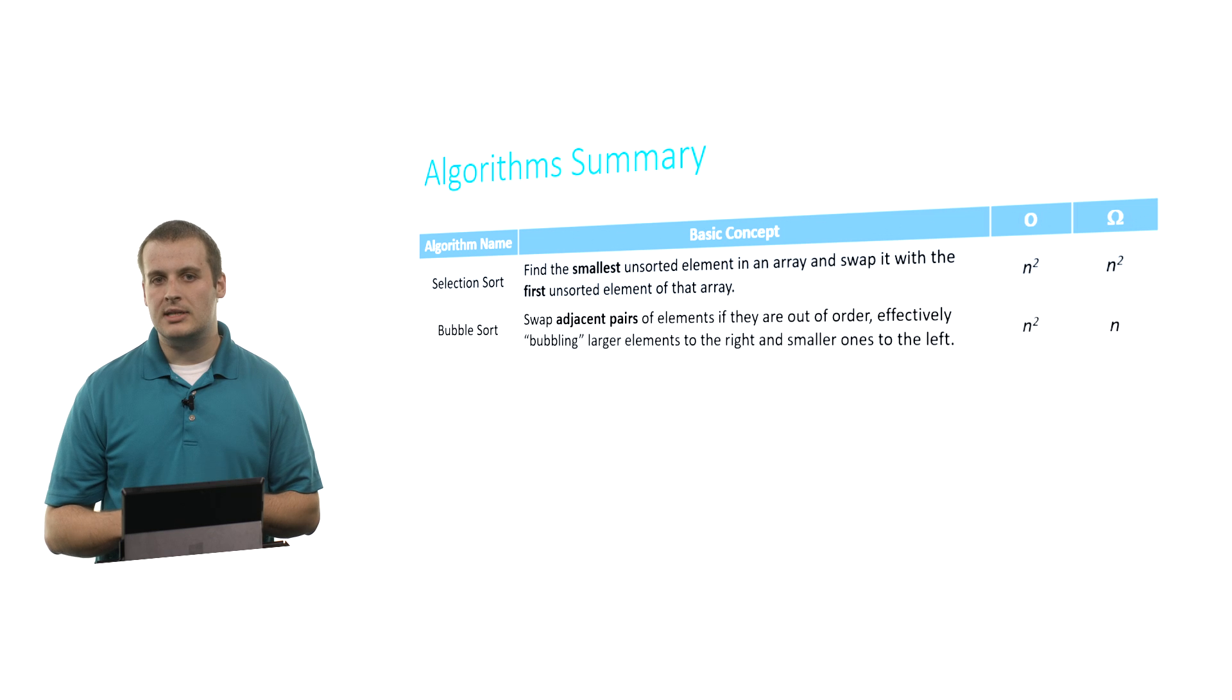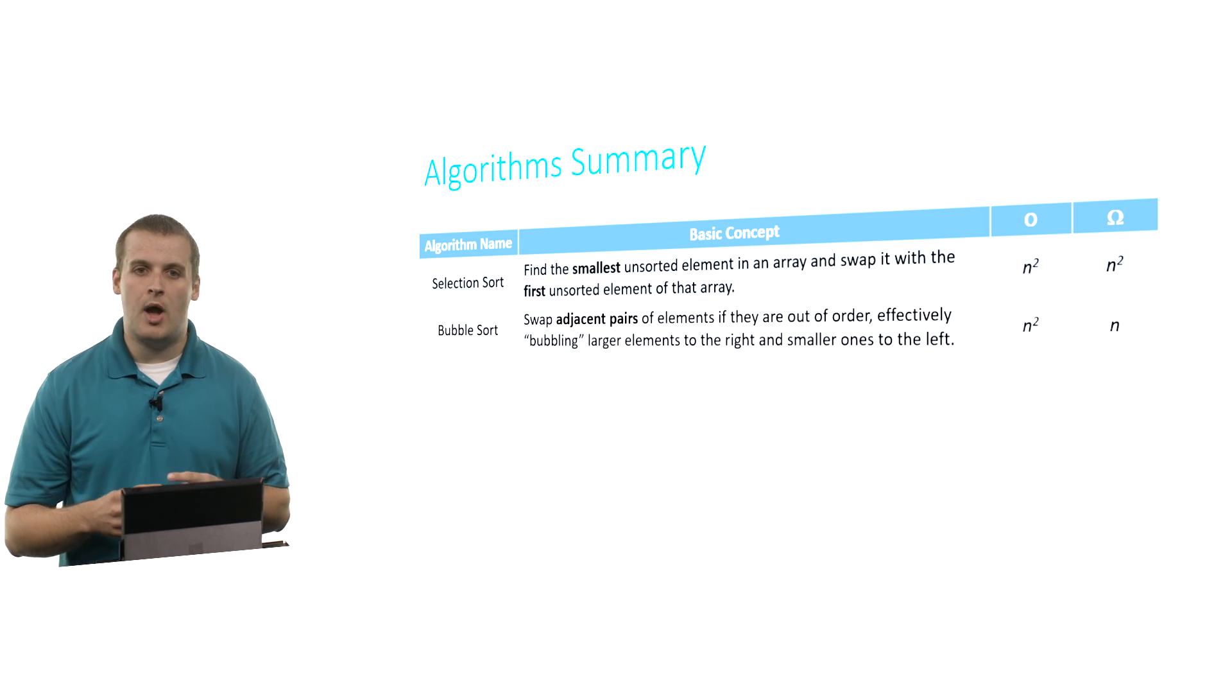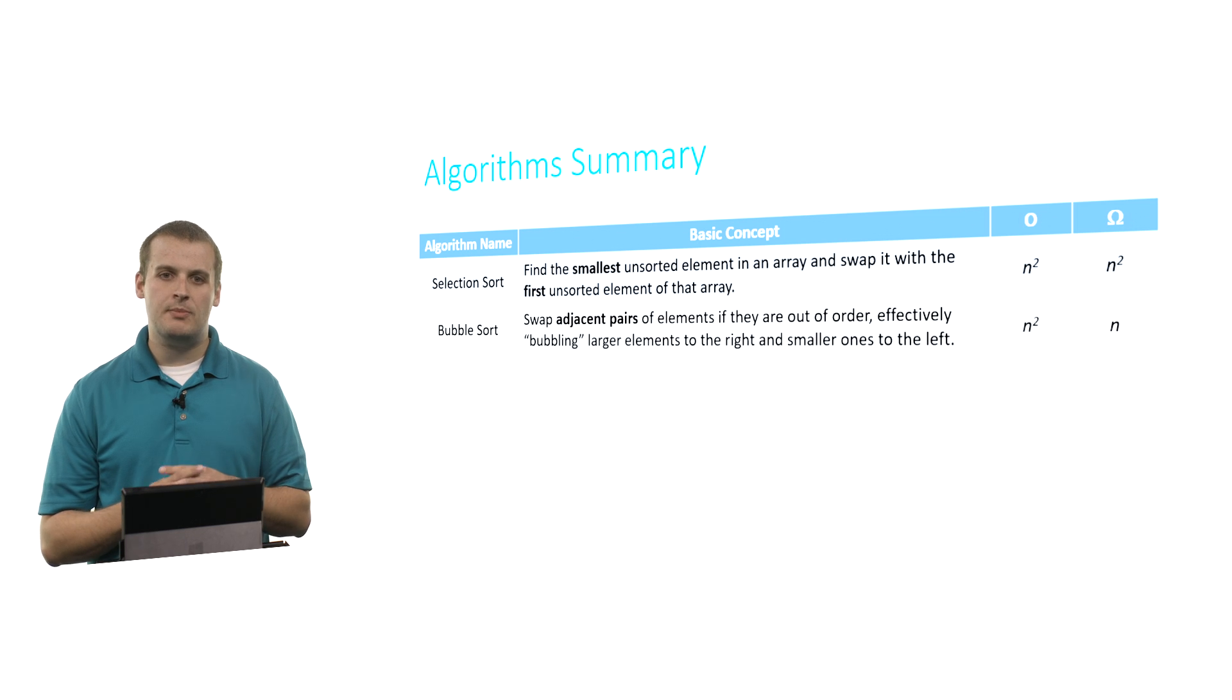Bubble sort, the idea behind that one is to swap adjacent pairs. So that's the key word that helps you remember the difference here. Selection sort is find the smallest. Bubble sort is swap adjacent pairs. We swap adjacent pairs of elements if they are out of order, which effectively bubbles larger elements to the right. And at the same time, it also begins to move smaller elements to the left. The worst case runtime of bubble sort is n squared. The best case runtime of bubble sort is n, because in that situation, we might not need to make any swaps at all. We only have to make one pass across all n elements.